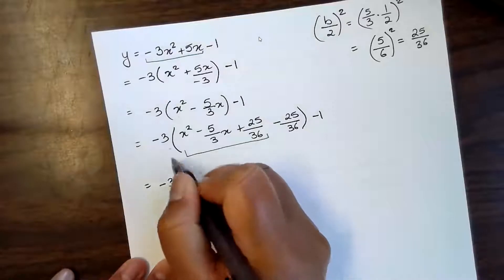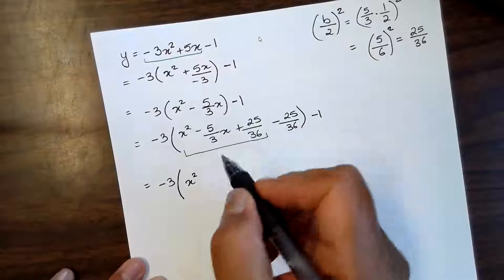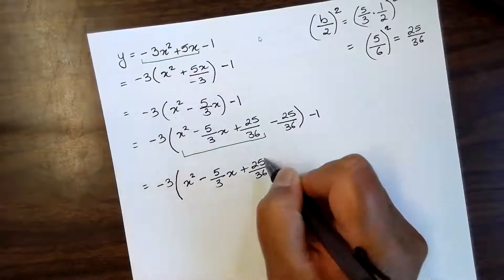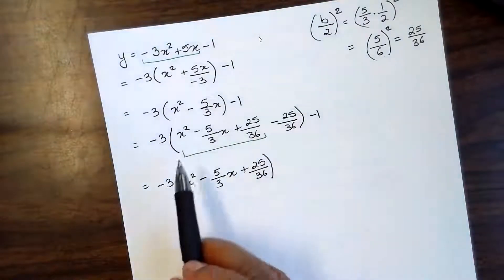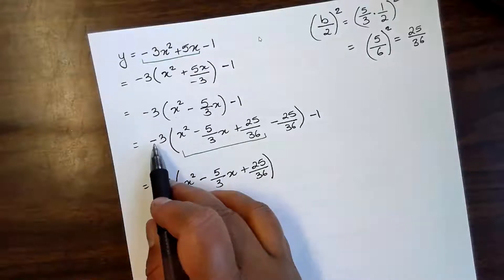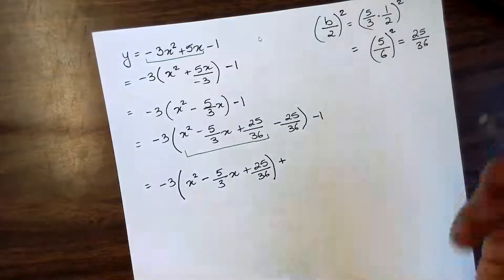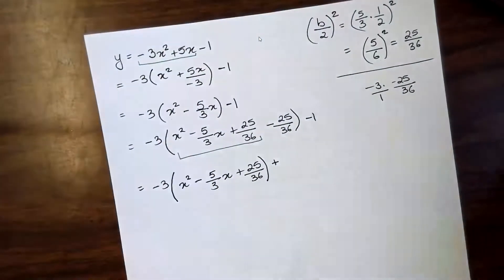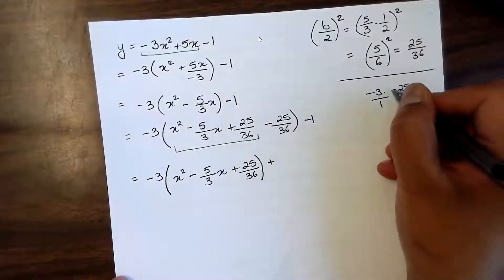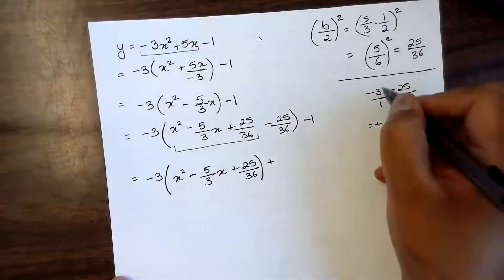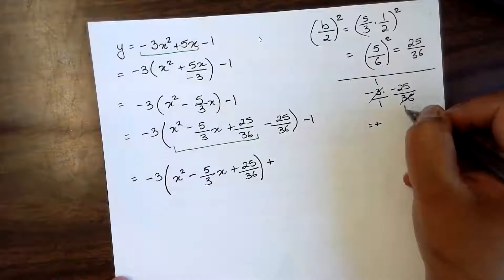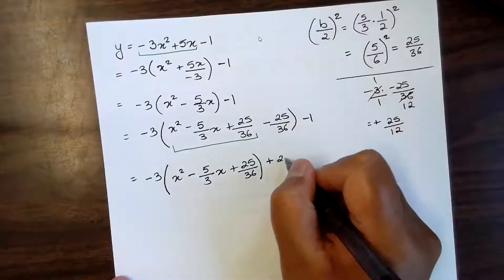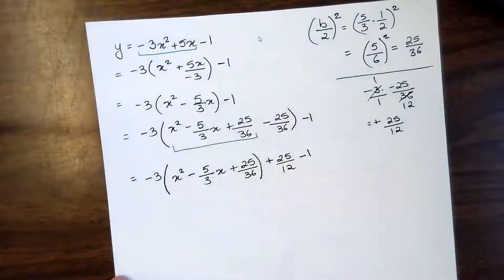So we have negative 3 times (x squared minus 5/3 x plus 25/36), and we multiply negative 25/36 by negative 3. A negative times a negative becomes positive. Writing negative 3 as negative 3 over 1: 3 goes into itself once, and 3 goes into 36 twelve times, so this becomes positive 25 over 12 on the outside, and we still have that negative 1 at the end.